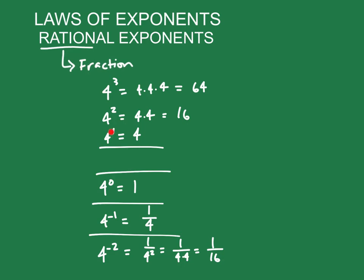If our exponent is large, the result of multiplying that number is going to get bigger. So if our exponent is greater than one, it's going to get bigger. If our exponent is one, it doesn't change. If our exponent is zero, it's going to be one. And as our exponents get negative, the numbers just get really small.